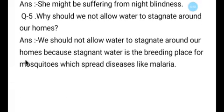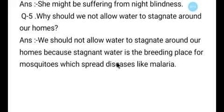Question number five: Why should we not allow water to stagnate around our homes? Answer: We should not allow water to stagnate around our homes because stagnant water is the breeding place for mosquitoes — खड़ा हुआ इकठा हुआ पानी mosquitoes का breeding place है — and mosquitoes spread diseases like malaria.